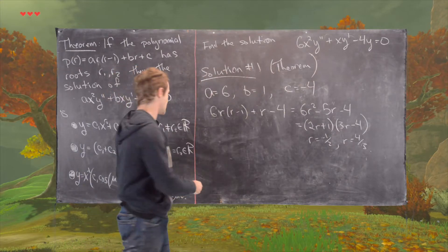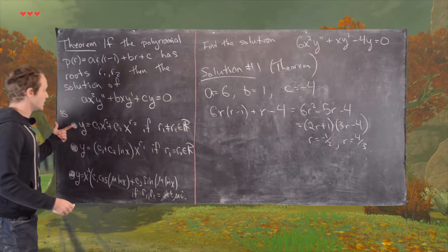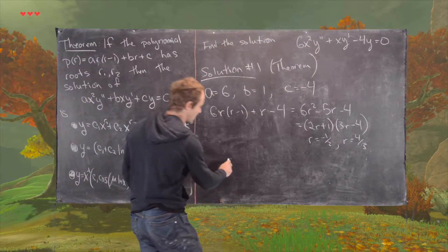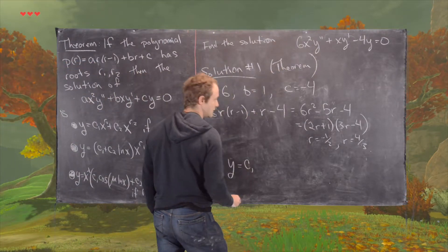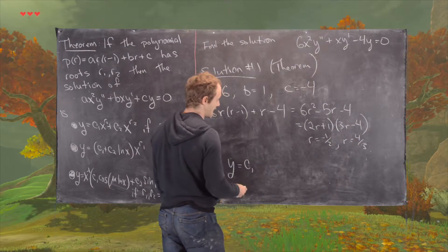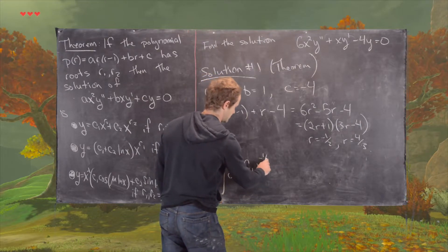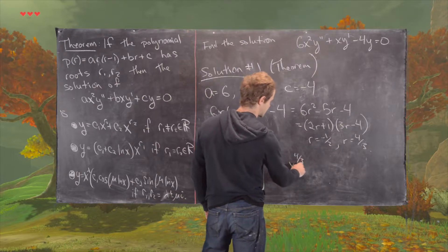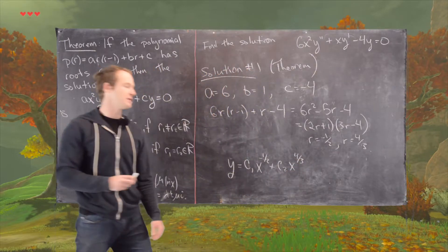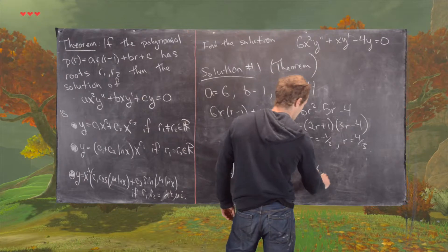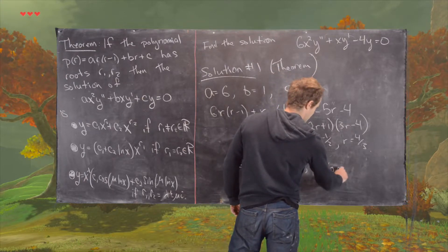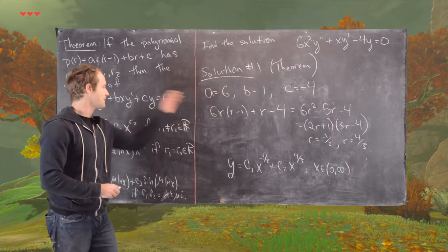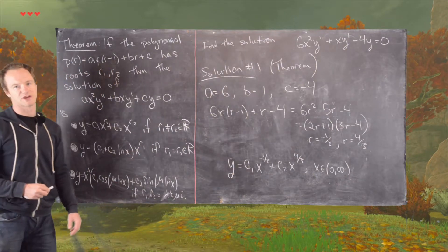And so the solution that we'll get will be of this form, because those are two distinct real numbers. So we have a solution, which is C1 X to the minus half plus C2 X to the 4 thirds. And we might as well point out here that the interval of validity for this solution is 0 to infinity, and that's actually part of this theorem, which I haven't stated.